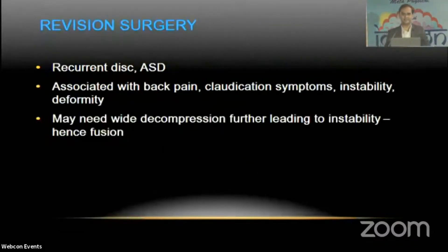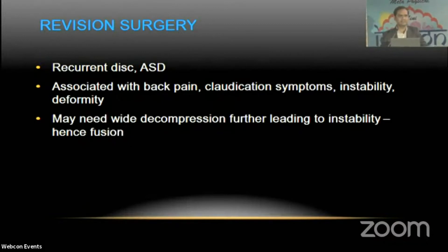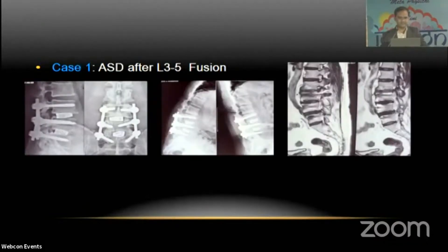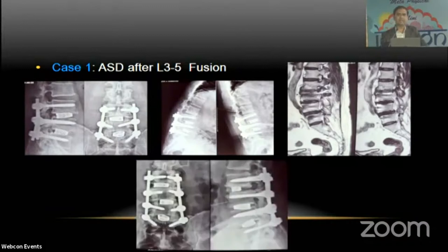Revision surgery cases — such as recurrent disc conditions and adjacent segment degeneration — are associated with back pain, claudication symptoms, instability, and deformity. Wide decompression may be required, which will further lead to instability; hence fusion is required in most revision cases. For example, a patient who underwent L3-L5 fusion later presented with L2-3 instability and stenosis, requiring L2-3 to be incorporated and fused into the construct.